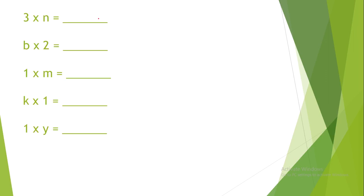3 times n equals 3n. b times 2 equals 2b. 1 times m equals 1m. It means m. k times 1 equals k. 1 times y equals y.